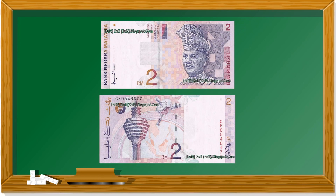This is a two ringgit note. This is an old note as well. Now it's very hard to find these notes. Let's look at this two ringgit note. Behind, we have the KL Tower.